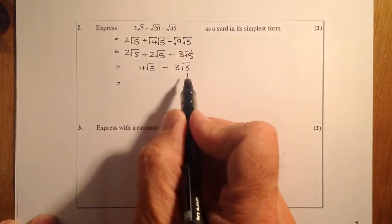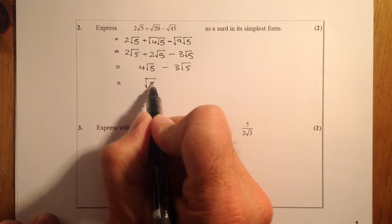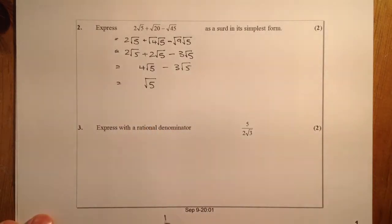And from that I'm going to subtract 3 root 5. So that leaves me with 1 root 5 or just root 5. So that's just the same as 1 root 5.